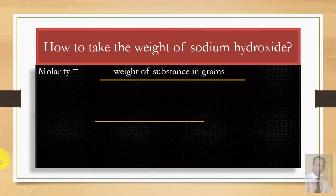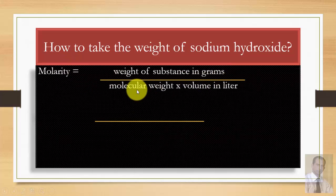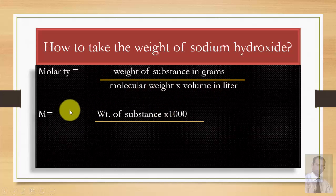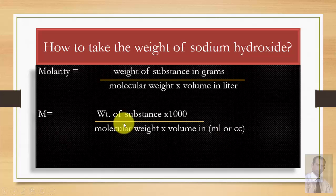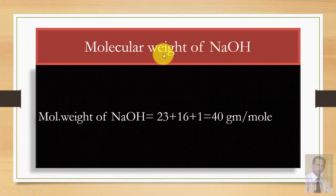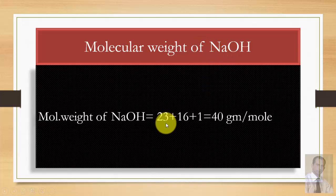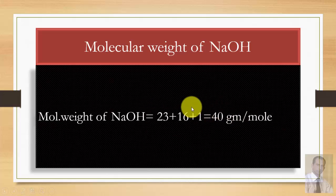Let's calculate the weight of sodium hydroxide needed for its molar solution. Molarity is equal to weight of substance in grams divided by molecular weight, multiplied by volume of solution in liters. Alternatively, molarity equals weight of substance times 1000 divided by molecular weight times volume in mL. To find the weight of sodium hydroxide, we need its molecular weight: sodium is 23, oxygen is 16, hydrogen is 1, giving a total molecular weight of 40 grams per mole.